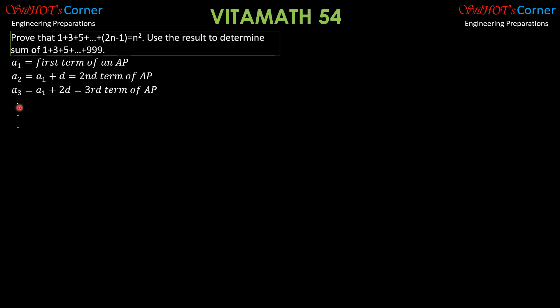We then proceed directly to the last term. We expect that the last term is the second-to-last term plus D. The second-to-last term is A1 plus (n minus 2) times D, so the last term would be A1 plus (n minus 1) times D.